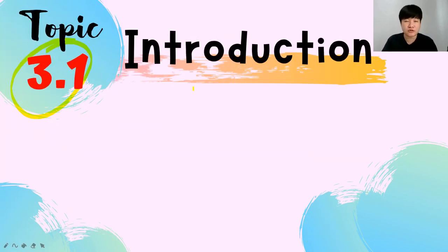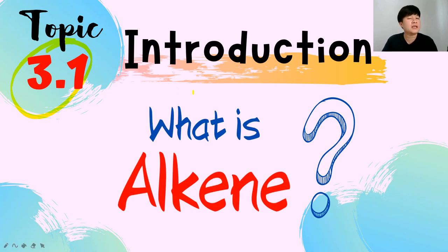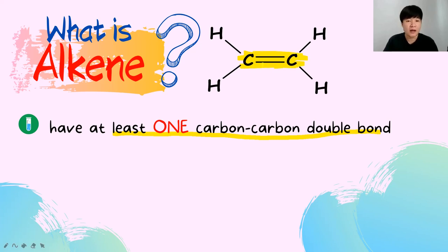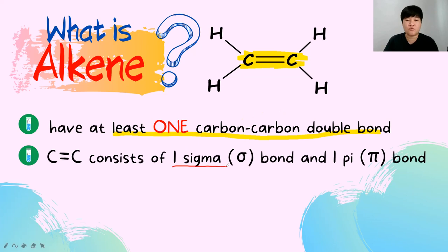Starting with section 3.1, the introduction of alkene: what is actually an alkene? First and foremost, an alkene must have at least one carbon-carbon double bond in its structure. The carbon-carbon double bond consists of one sigma bond and one pi bond.